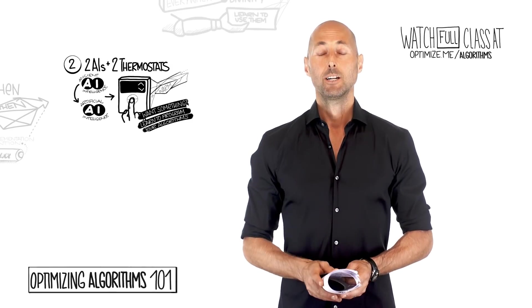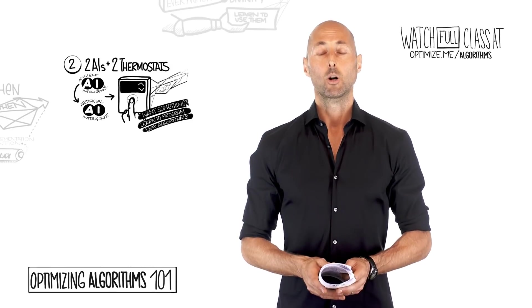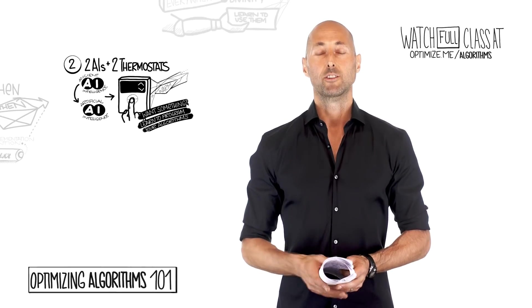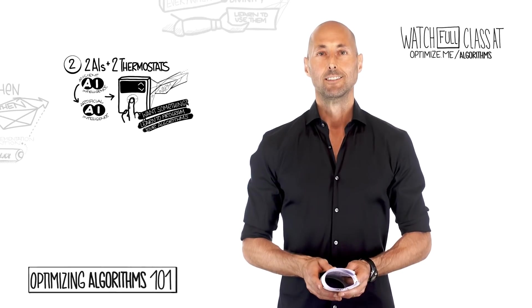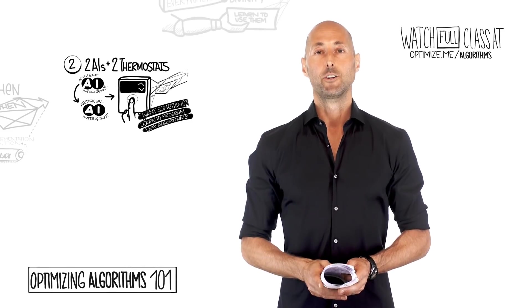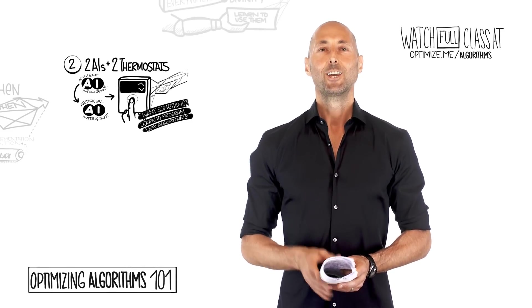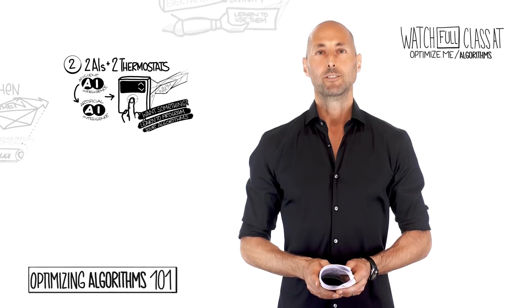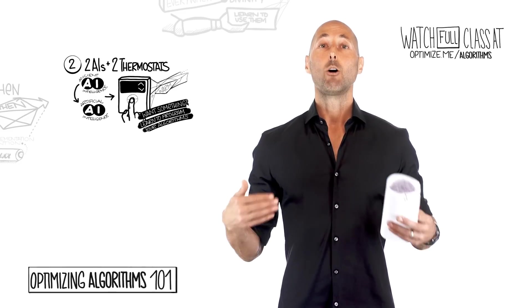Then you have Ray Dalio, genius billionaire, one of the most successful and wealthiest people in the world. What does he tell us? He tells us that the most important language that you and your kids can learn in the 21st century is how to write algorithms.